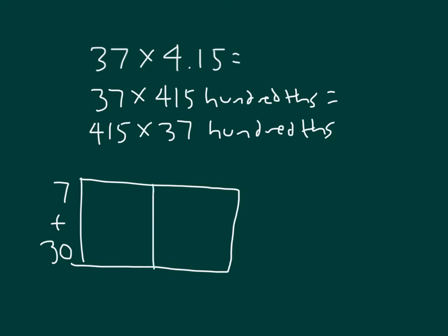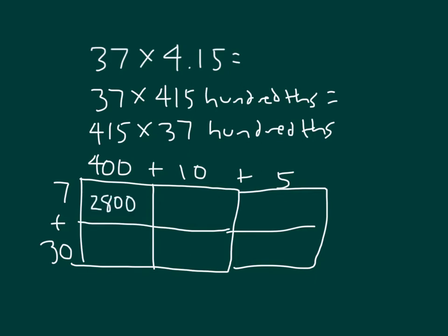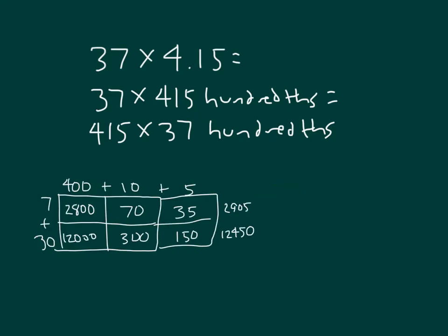Remember, we're dealing with hundreds, but in this case we can just look at it 415 times 37 hundredths. And then so that's 400, 10, and 5. And we have 7 plus 30 for the 37. 400 times 7 is 28 hundred, 10 times 7, 75 times 7, 35. Adding those together we get 2,905. 30 times 400 place three zeros, 3 times 4 is 12. 10 times 30, 300, and 30 times 5, 150, and that would be 12,450. Shrink it a little so that I have room for my standard algorithm and my other approach here. Use an estimate as well. 40 times 4 which is 160. Let's carefully add those two together to finish up my area model.